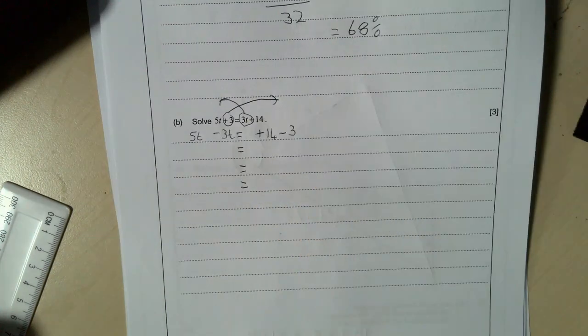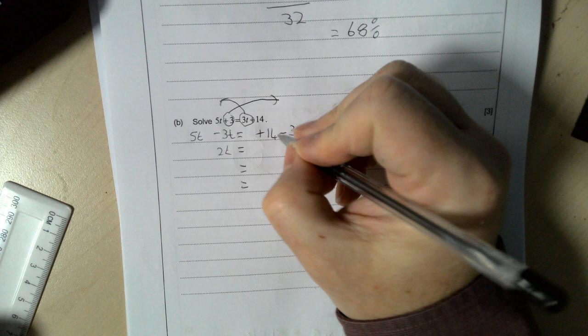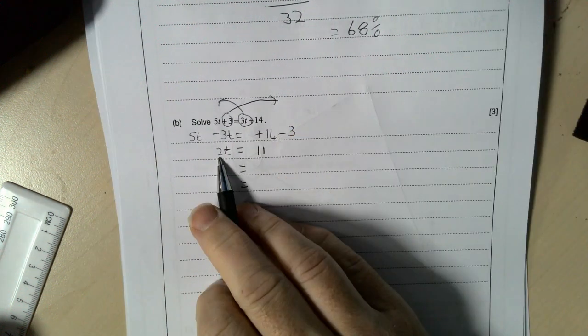5t - 3t is 2t, 14 - 3 is 11. So I get 2t = 11. I need to take that 2 over now. The opposite of times 2 is divided by 2, so it becomes 11 divided by 2.